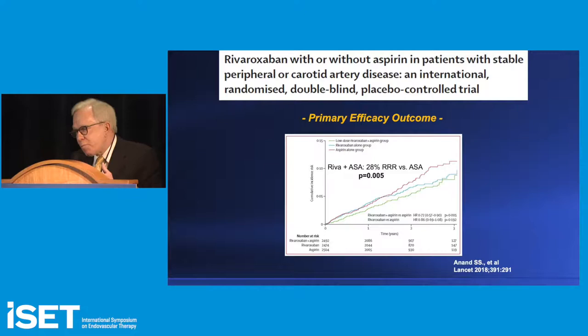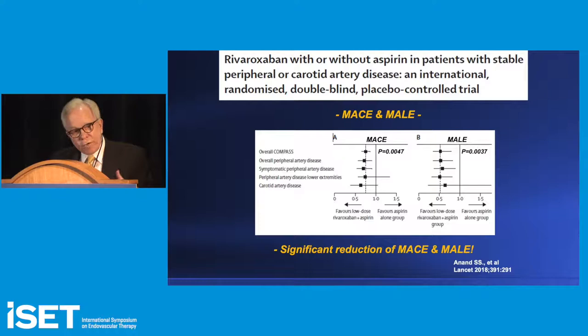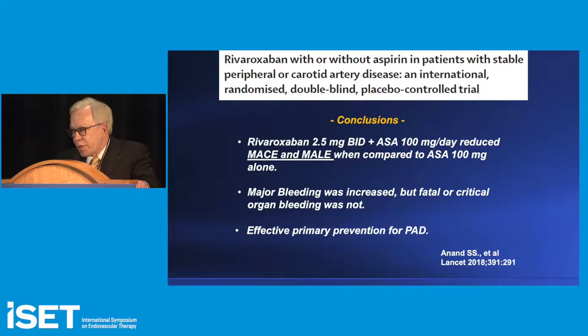Most importantly, in the 7,400 PAD patients studied by Sonia Anand and colleagues, there was a 28% risk reduction in major adverse cardiovascular events with rivaroxaban 2.5 mg twice a day plus 100 mg aspirin — and a reduction in major adverse limb events as well. To my knowledge, this is the first major study showing both. Major bleeding was increased, but not fatal or critical organ bleeding, and it was effective for primary prevention of PAD.